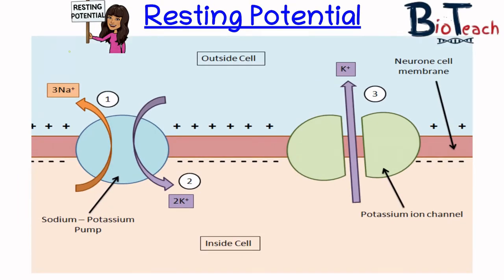The sodium-potassium pump uses active transport to move three sodium ions (Na+) out of the neuron for every two potassium ions (K+) that are moved in. The potassium ion channel uses facilitated diffusion to move potassium ions (K+) out of the neuron down their concentration gradient. As the sodium-potassium pump moves sodium ions out and the membrane is not permeable to sodium ions, this creates an electrochemical gradient, because there are more positive sodium ions on the outside of the cell than the inside.